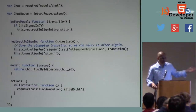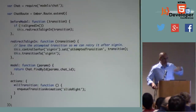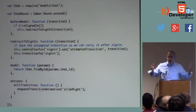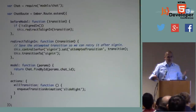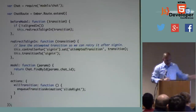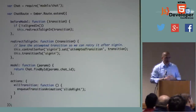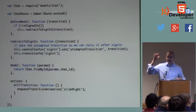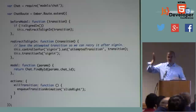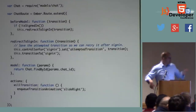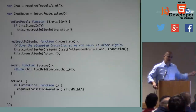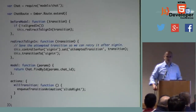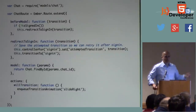Assuming the user is signed in, we skip the before model hook and go to the model hook: what is the data we want to display on this page? We've got chat.findById and we get this hash of params. Remember in the route we had slash chats slash colon chat ID — that params object will have a chat ID property pulled right out of the URL. We pull that out and say that is the model for our route.